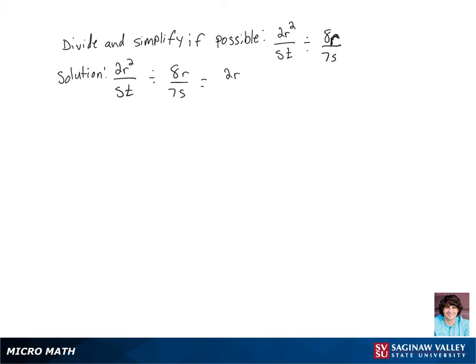So we're going to get 2r squared over st times 7s over 8r. Now that we've done that, we're going to go ahead and multiply across the numerator and the denominator.